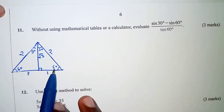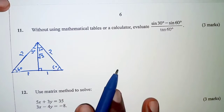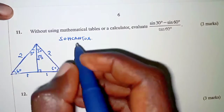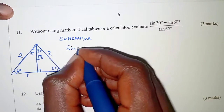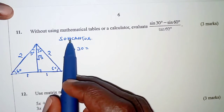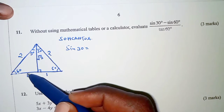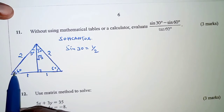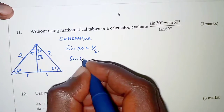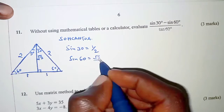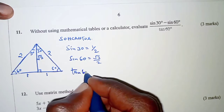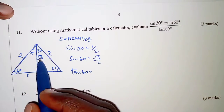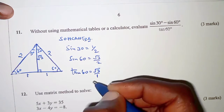From this triangle, we will be able to get sine 30, sine 60, and tan 60. Applying SOHCAHTOA: sine 30 is equal to opposite over hypotenuse — when you are at 30, the opposite side is 1, hypotenuse is 2, so that is 1 over 2. For sine 60, opposite over hypotenuse gives root 3 over 2. And tan 60 is opposite over adjacent, that is root 3 over 1, which is just root 3.